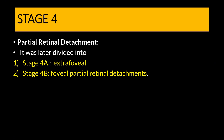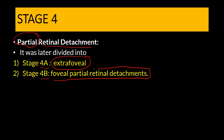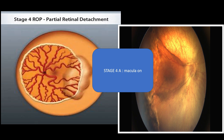In stage four ROP we have partial or incomplete retinal detachment, further divided into stage four A and four B. Stage four A is incomplete retinal detachment that is extra-foveal, meaning the detachment has not involved the foveal region. In the example picture, the retina is detached but the macular region seems attached — this is stage four A ROP with the macula on.